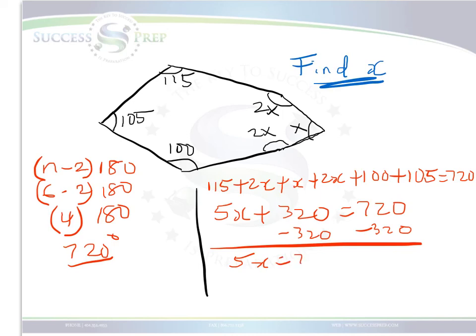Well, 5x equal to pretty much 400 when you subtract the 320 from 720. Then we can divide 5 on both sides. And at this point, x would equal 80. And that will be the answer to x. Thank you.